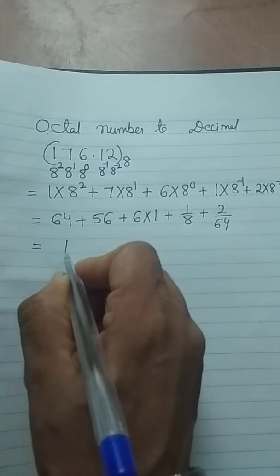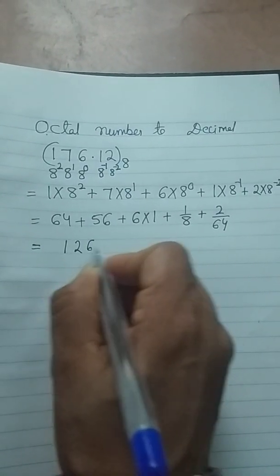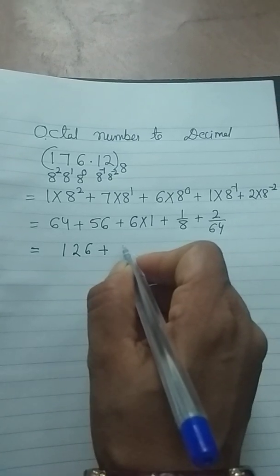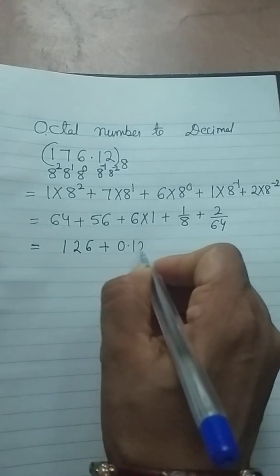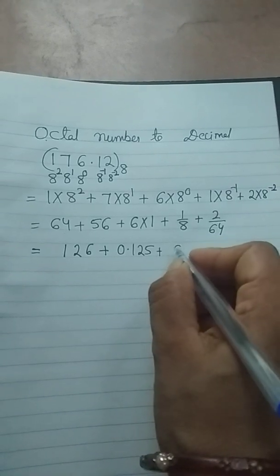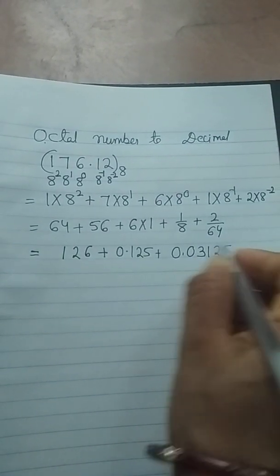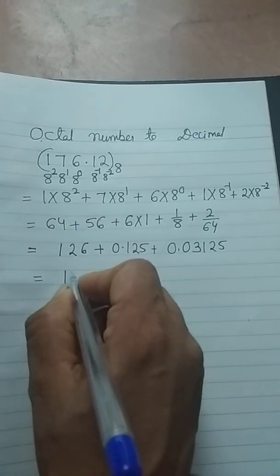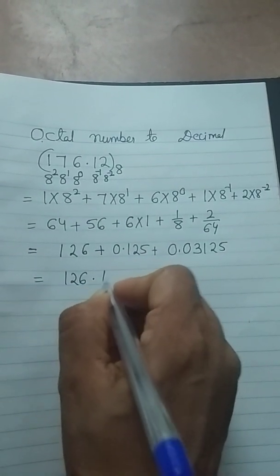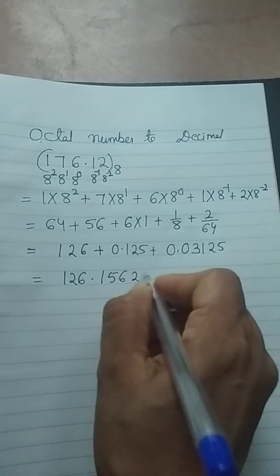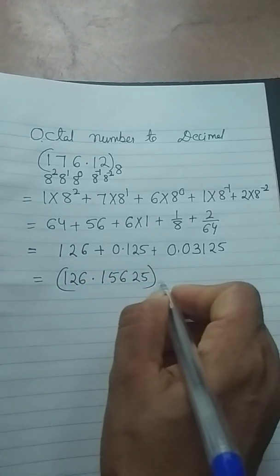This one will be 126 plus 1 by 8 is 0.125, 1 by 32 is 0.03125. Answer will be 126.15625 base 10.